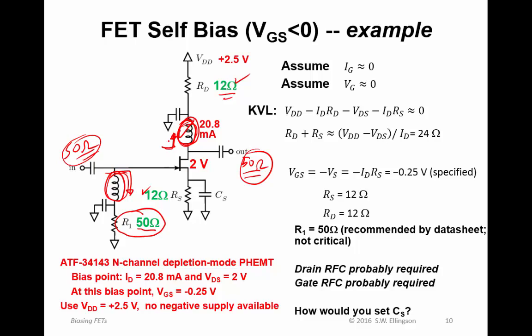One final question here is, how would you select C_S? The purpose of C_S is to create an RF ground and thereby hiding this resistor at RF. So the impedance of this thing should be much less than the impedance of this thing at RF. You'd want to choose a capacitance here that results in an impedance looking in this direction which is much less than 12 ohms. Given the frequency, you would compute a capacitance that results in impedance looking this way that's much less than 12 ohms.